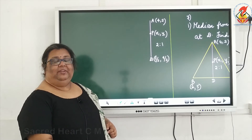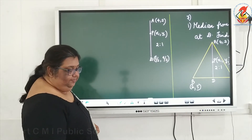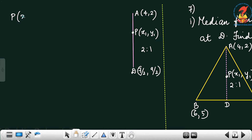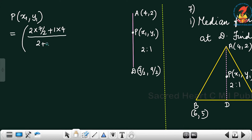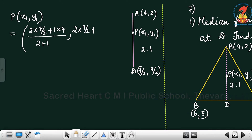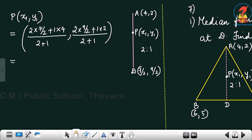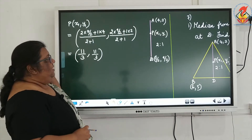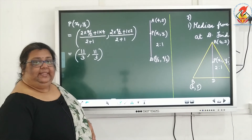Using section formula, we can find the coordinates of P. P equals the ordered pair: (2 into 7/2 plus 1 into 4) by (2 plus 1), and (2 into 9/2 plus 1 into 2) by (2 plus 1). After simplifying and cancelling, you will get the answer as (11/3, 11/3). So the coordinate of P which divides line segment AD is the ordered pair (11/3, 11/3).